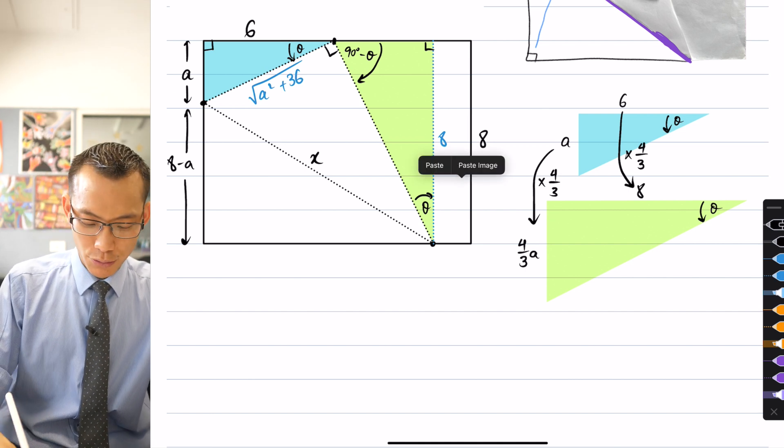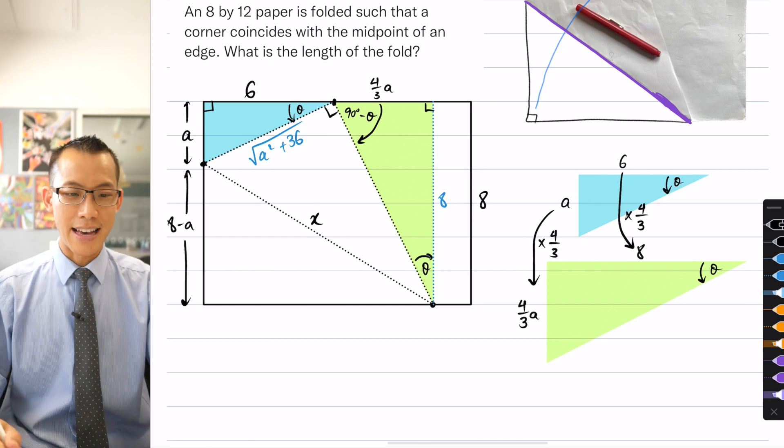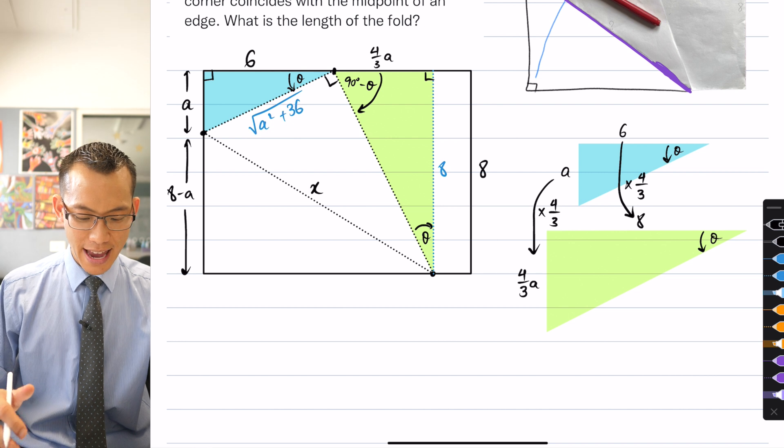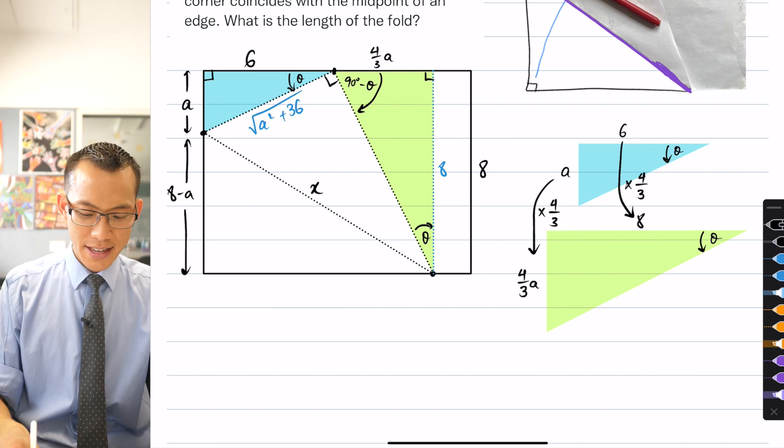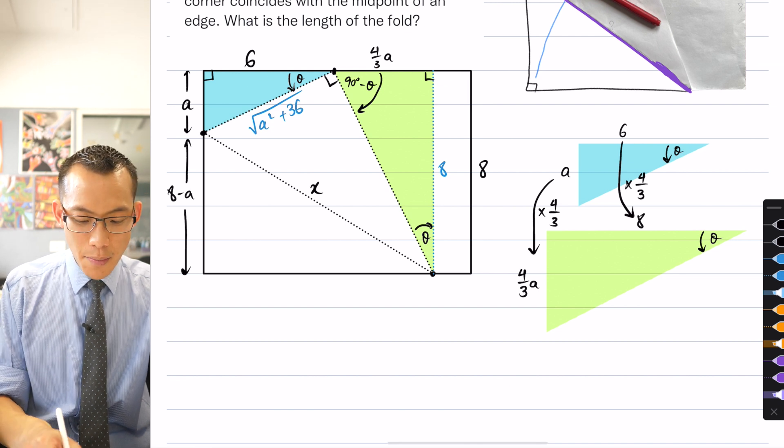I can use that length if I can come back to the original triangle here. This is 4 thirds A, like so, and what that allows me to do is I can actually say, hey, hold on a second, this 4 thirds A and this 6 over here, they can combine.